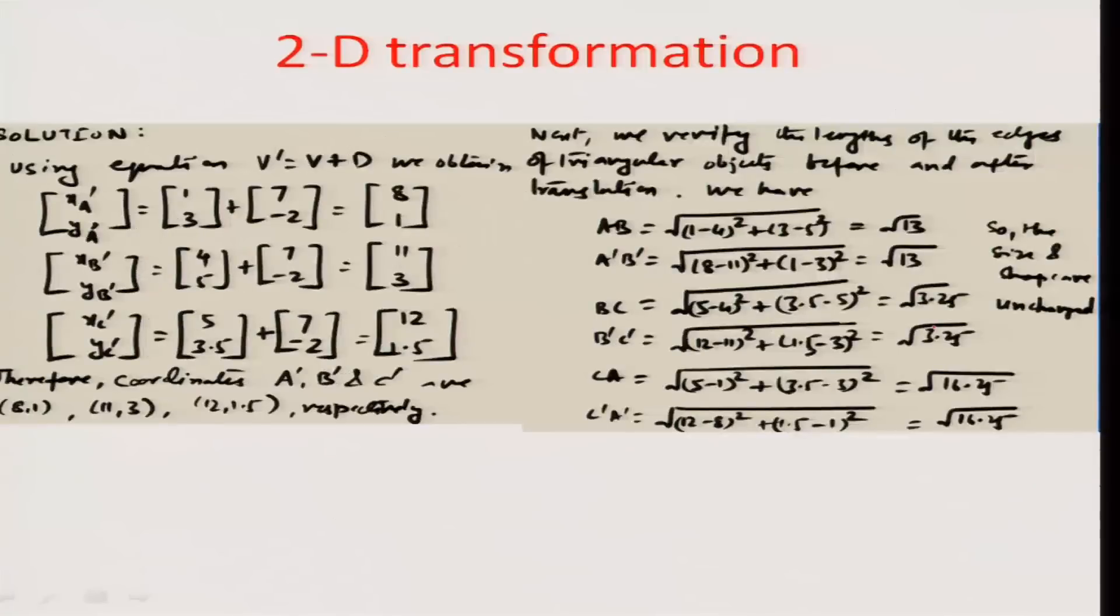You can look at all the different other lengths. For example, bc comes out to be 3.25, b'c' comes out to be 3.25, ca and c'a' comes out to be √16.25 and √16.25 which means that the transformation is working uniformly for a homogeneous transformation of a point on a two dimensional plane.